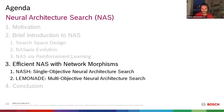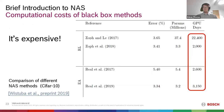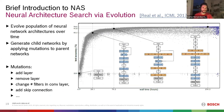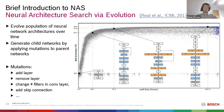Regarding skip connections: you just keep it as simple as possible and randomly add them. You randomly choose one layer, randomly choose a second layer, and add a skip connection between them. If it was a good idea, the training performance will be better than before. If not, you just discard it and don't consider that option anymore.